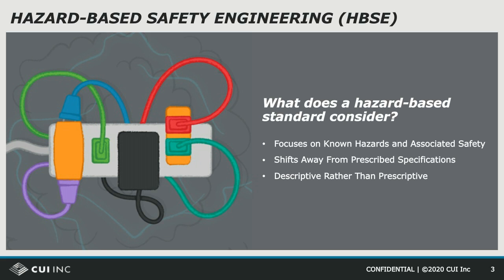By "prescribed," we mean specific safety procedures are specified for all products. IEC 62368 describes guidelines for a safe product rather than prescribing implementations for safe products. By "describe," we mean the regulations describe the objective of the safety procedure and how it can be addressed.